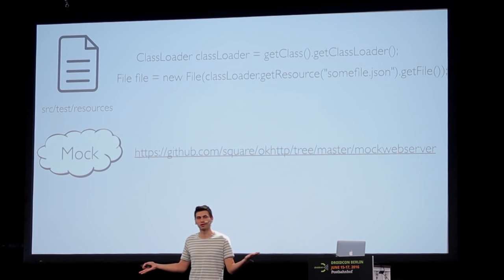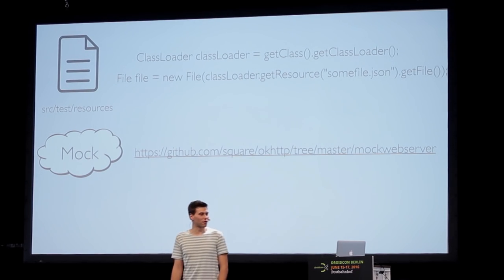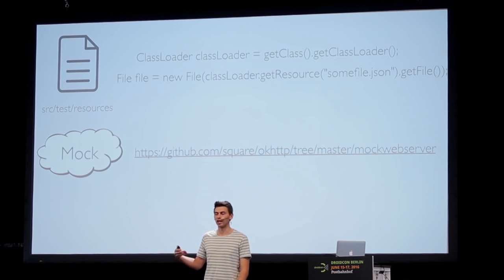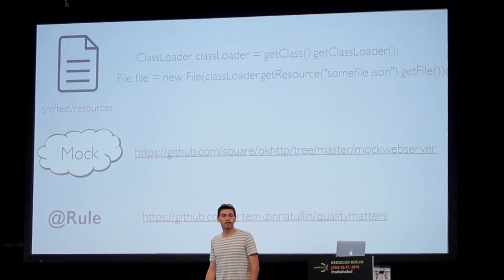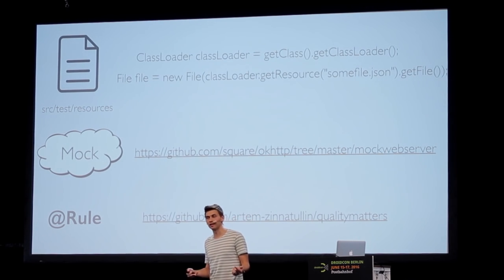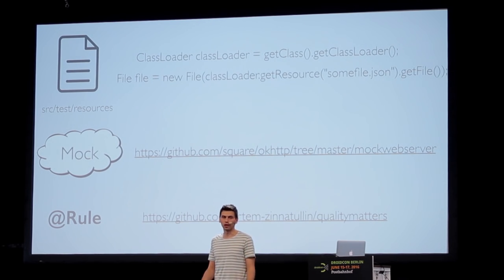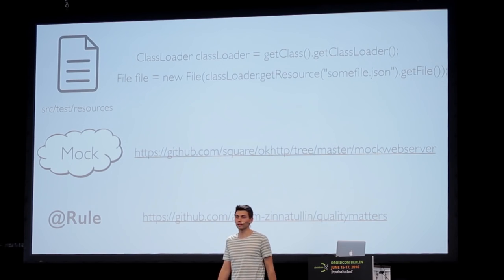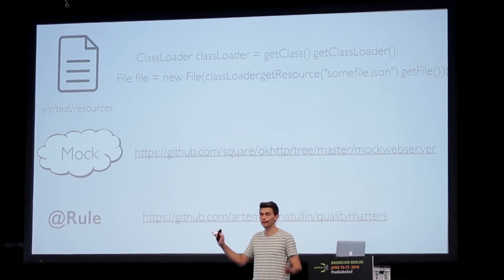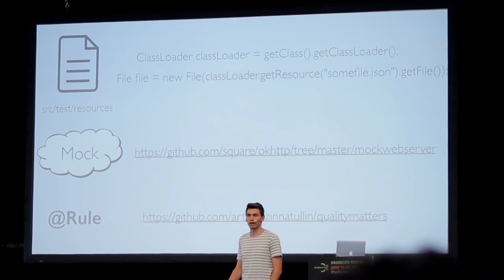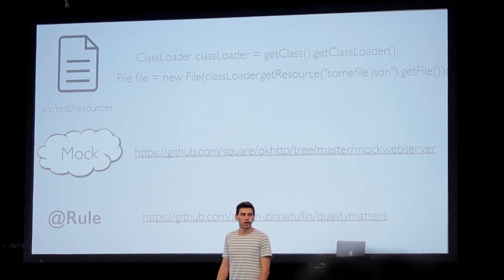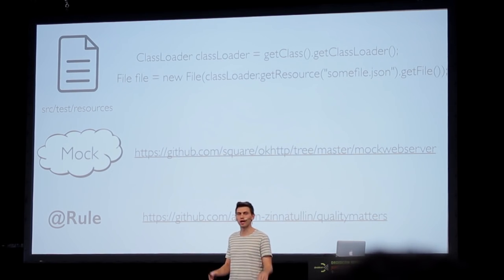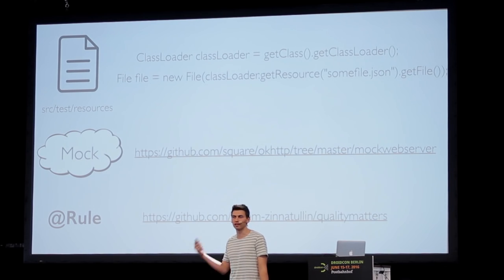From Square — who else — along with OkHttp, there is OkHttp MockServer we can use. And since Plat has no dependency injection, we need a JUnit rule to hook in this mock server without changing the actual production code. For more about that rule pattern, Artem Zinnatullin's Quality Matters blog is a good starting point.